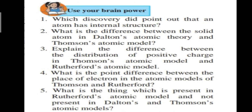Third question: explain the difference between the distribution of positive charge in Thomson's atomic model and Rutherford's atomic model. According to Thomson's atomic model, the positive charge is distributed throughout the atom like a sphere of pudding or a watermelon - the red color is spread all over with black seeds (electrons) in it. Whereas according to Rutherford's atomic model, an atom consists of a positively charged nucleus present at the center of the atom, and negative charges move around the nucleus.